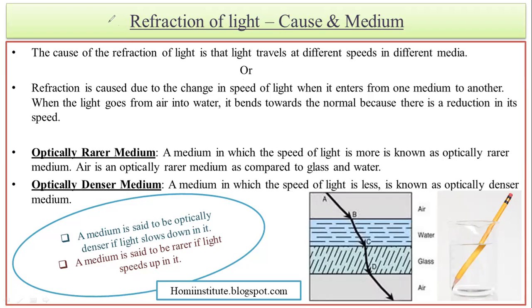What makes the refraction of light possible? Basically, refraction of light occurs due to the change in the speed of light in different media.